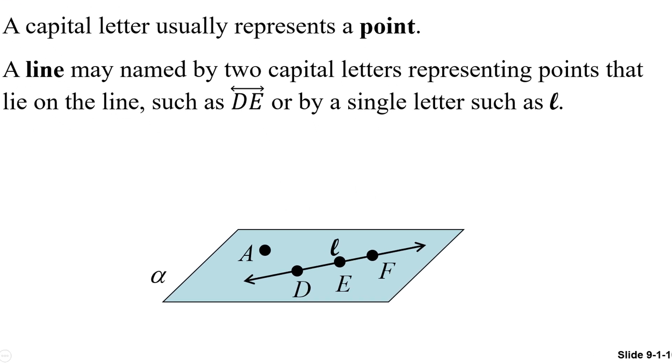A line can be named by two capital letters representing any two points that are on the line. For example, the line here could be called DE, with a line symbol over the top of it. Or, you can also name the line using a single letter, usually a cursive lowercase letter, like here we have the letter L.